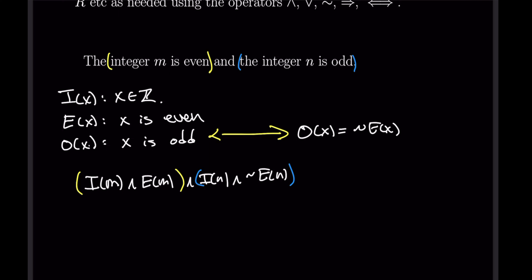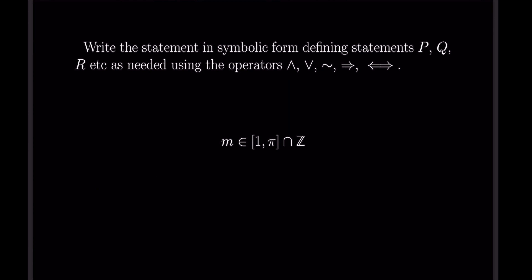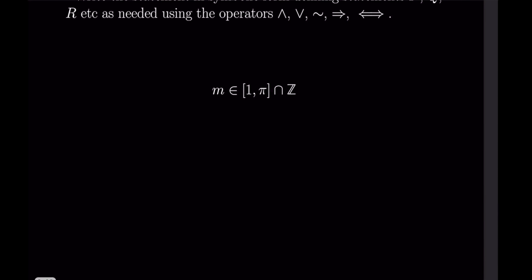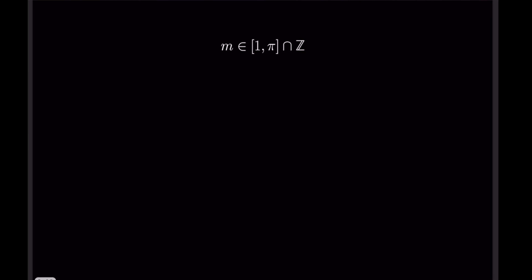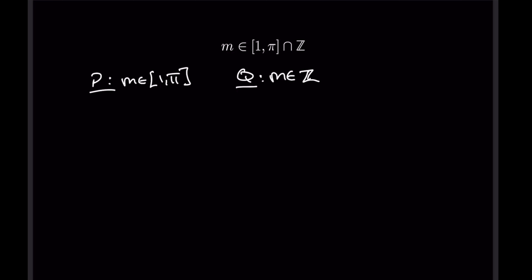There's probably an easier way to do that, but it's nice to go down the rabbit hole while things are simple. Next: 'm is an element of the closed interval from one to π intersected with the integers.' An intersection is really like a logical AND, so this is fairly straightforward. Let p be 'm is from the interval [1, π]' and q be 'm is an integer,' giving us simply p ∧ q.